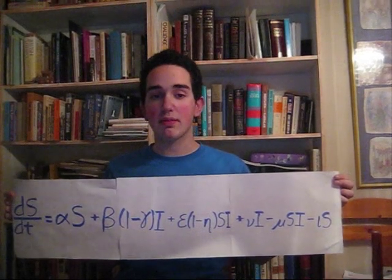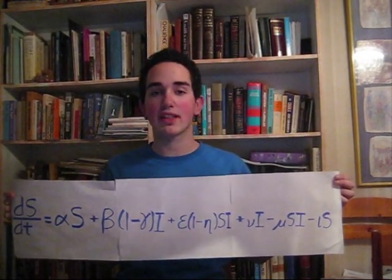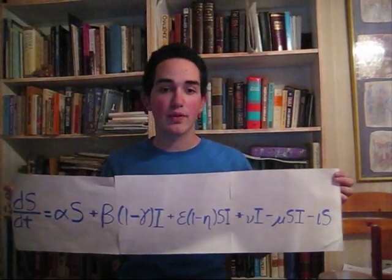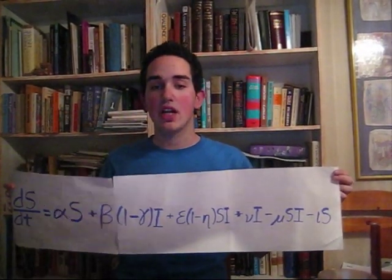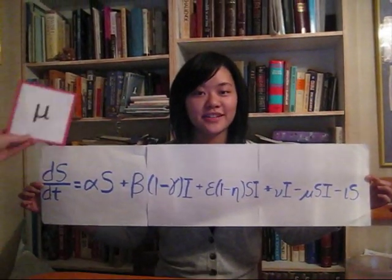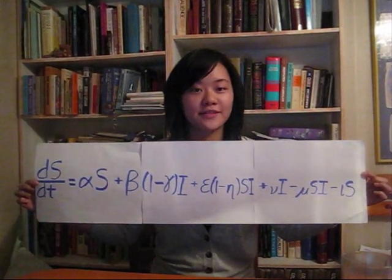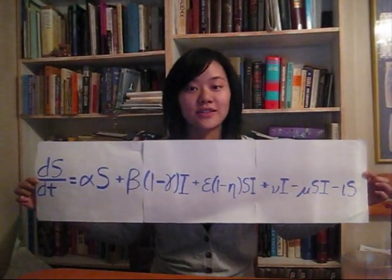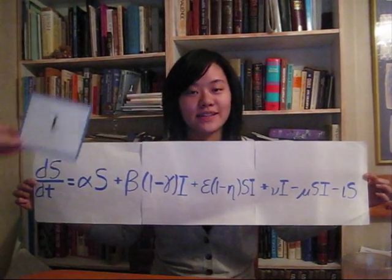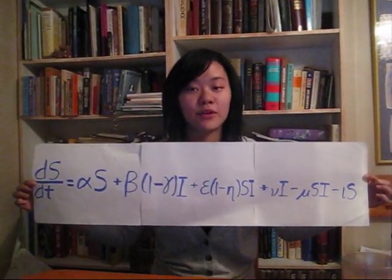Mu represents the recovery rate of infected, which is multiplied by the number of infected to determine the number of newly recovered susceptibles. Nu represents both the chance that a susceptible and an infected will have sexual relations as well as the chance of infection resulting from this behavior. Finally, iota is the chance of death of a susceptible individual.